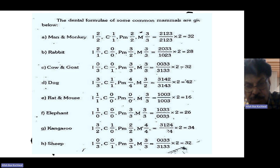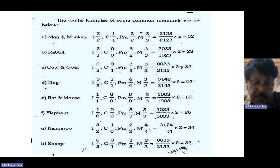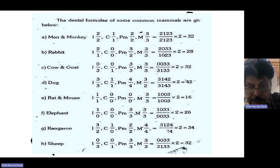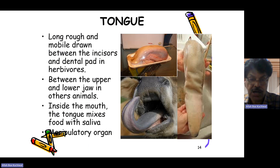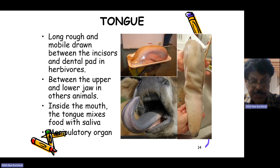Cow, goat, and sheep have 32 teeth; the dog has 42 teeth; rat and mouse have 16 teeth; the elephant has 26 teeth; and the kangaroo has 34 teeth. The tongue is a long, rough, and mobile organ drawn between the incisors and the dental pad in herbivores and between the upper and lower jaw in other animals.